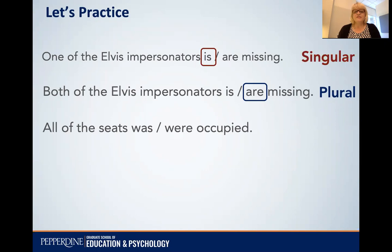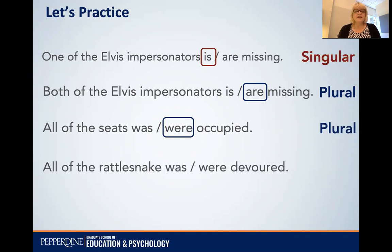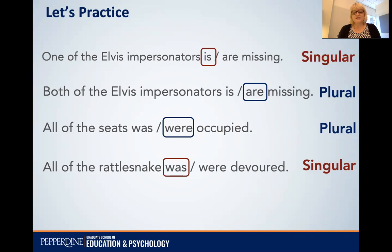'All of the seats was or were occupied?' Here we'd use the plural because 'seats' is plural. And the last: 'All of the rattlesnake was or were devoured?' Here we'd use the singular because 'rattlesnake' is singular.